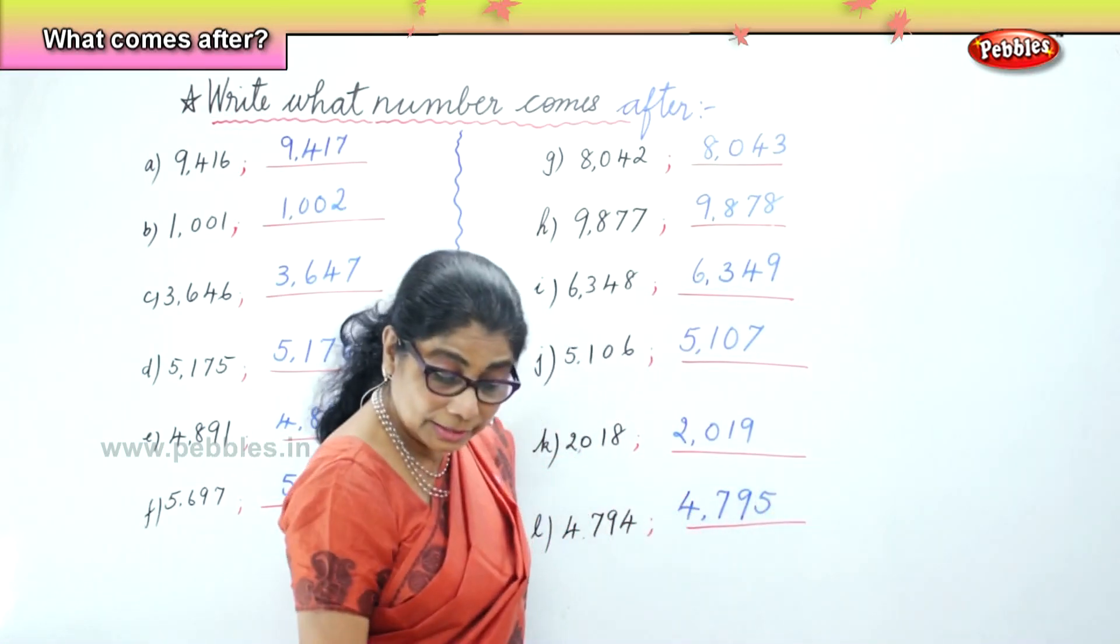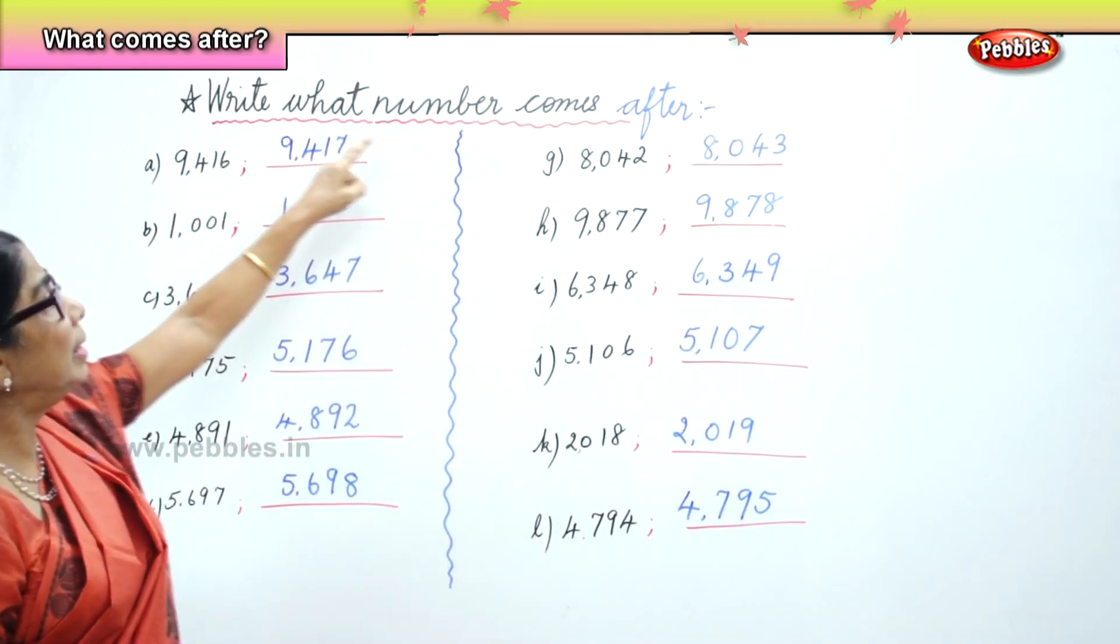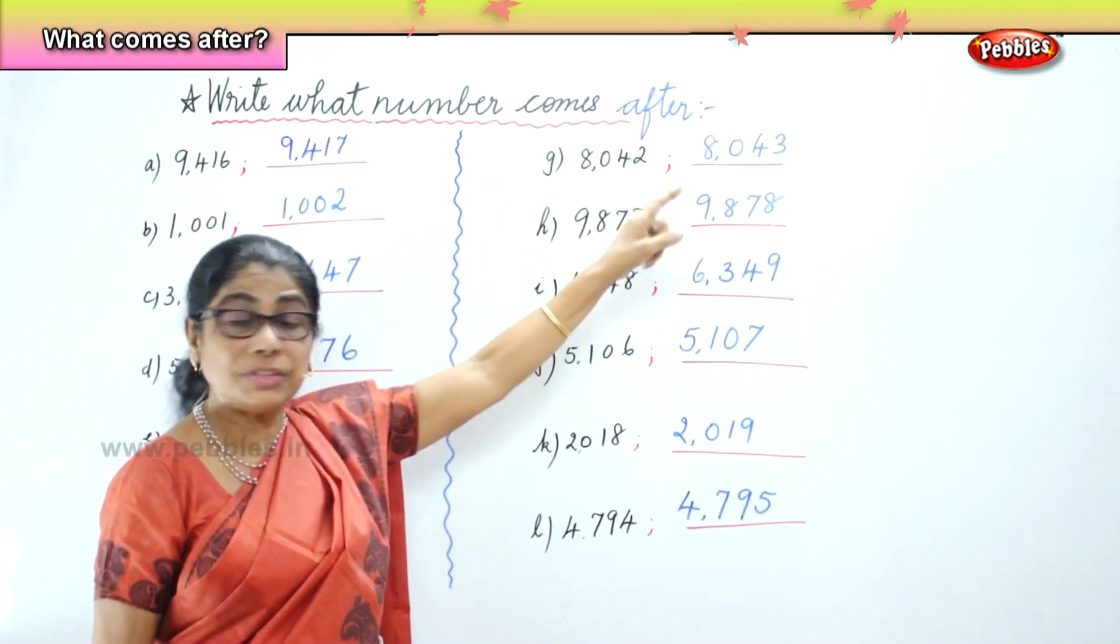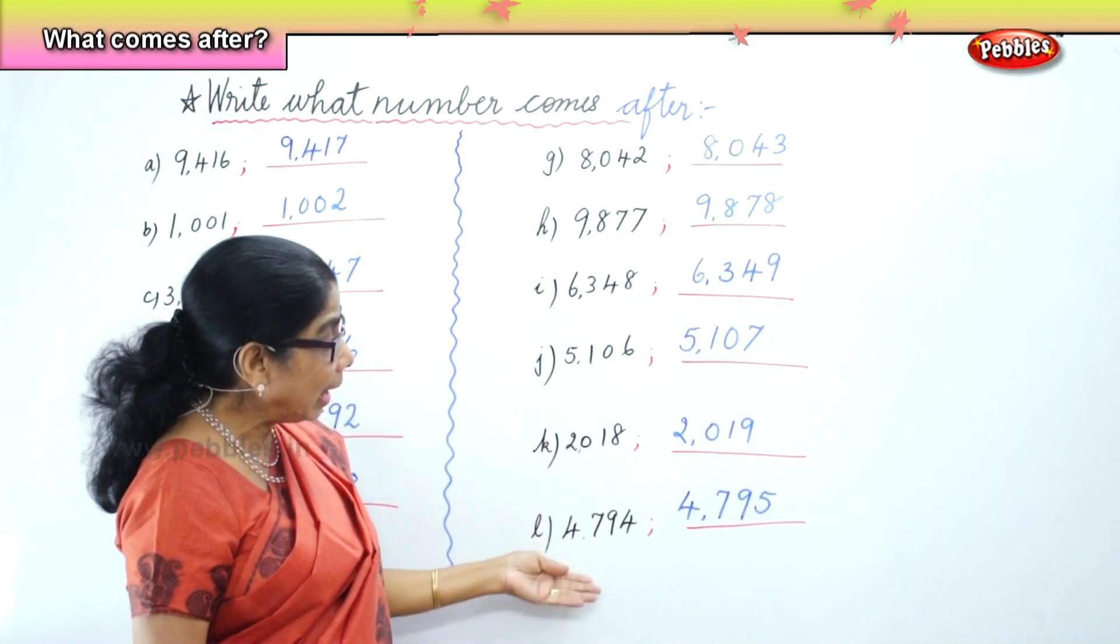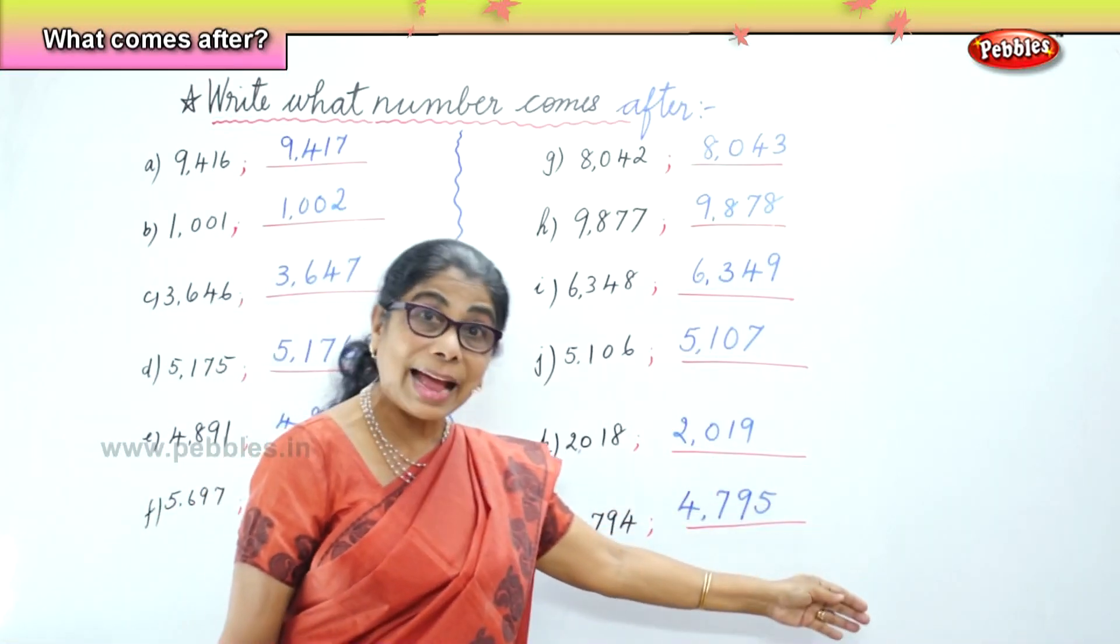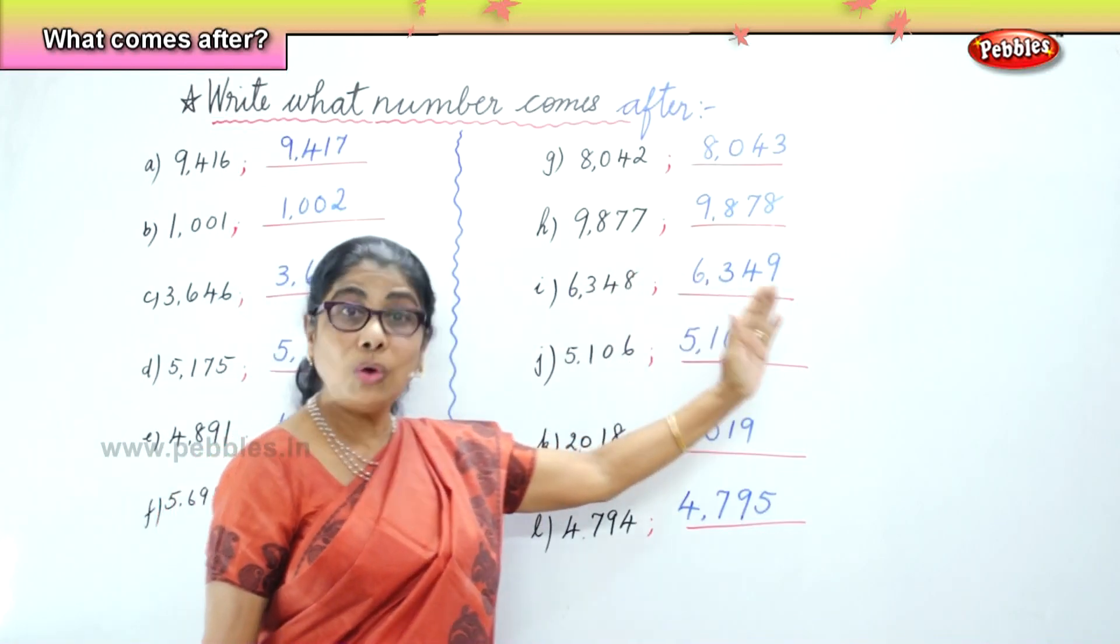What did we learn today? We learn to write what number comes after. I gave you whole lot of numbers and you identified and wrote the number that comes after. You are given one number. What number follows?